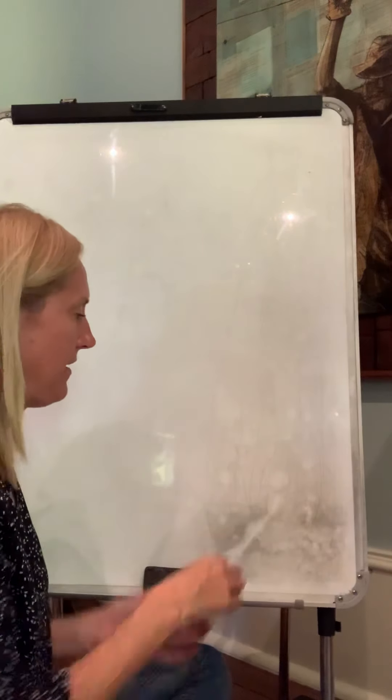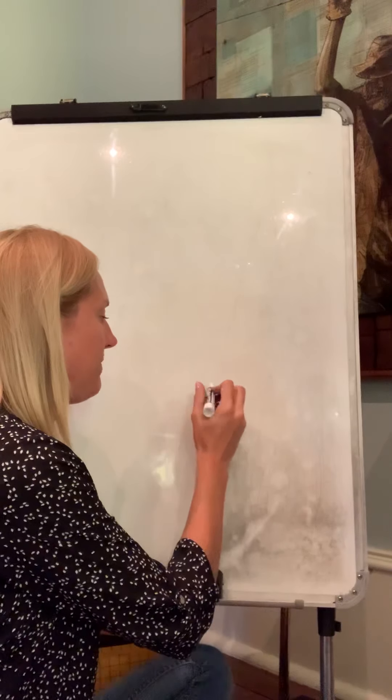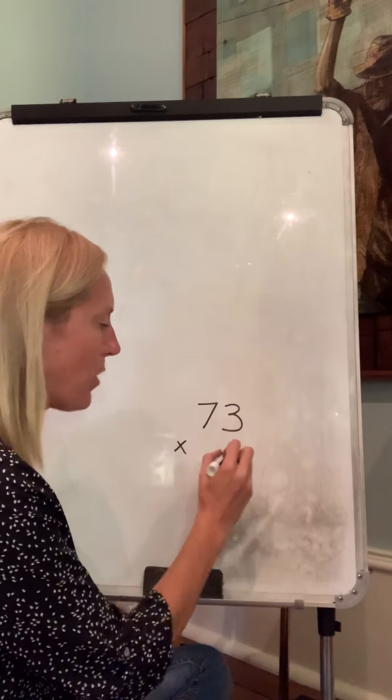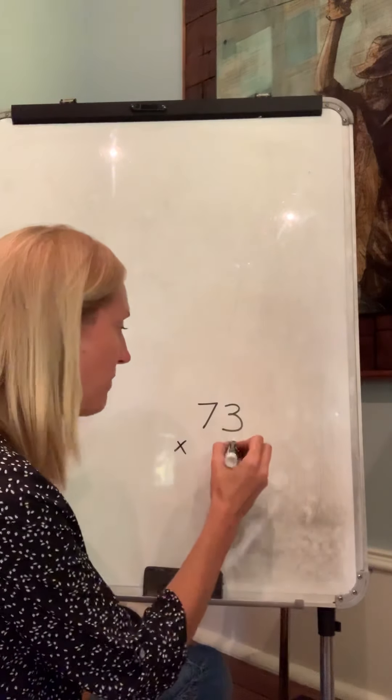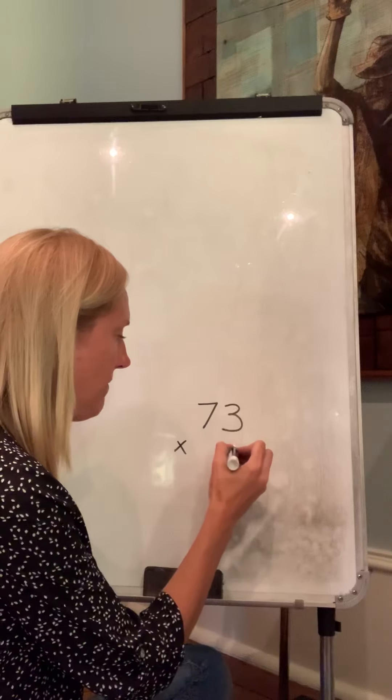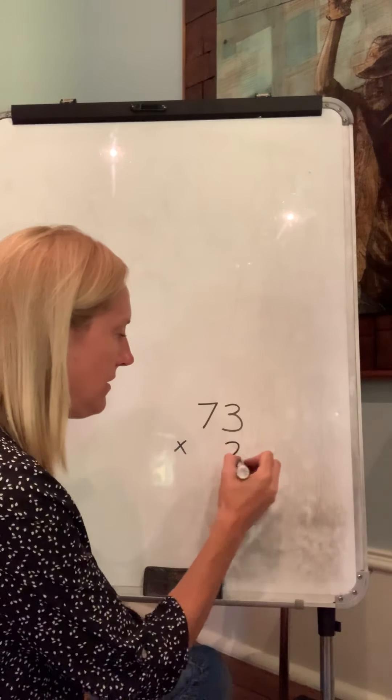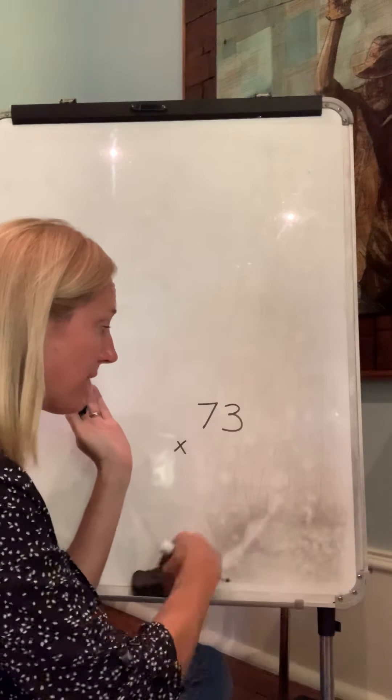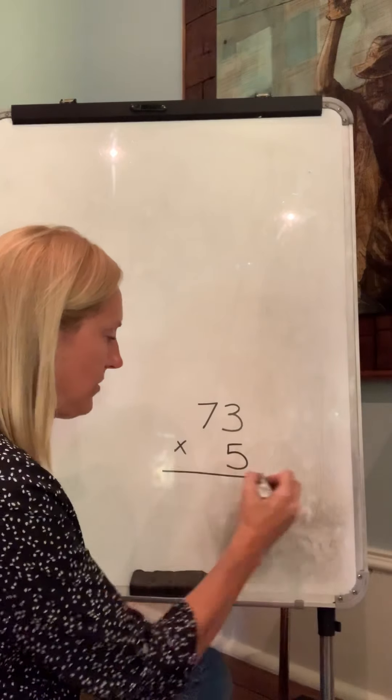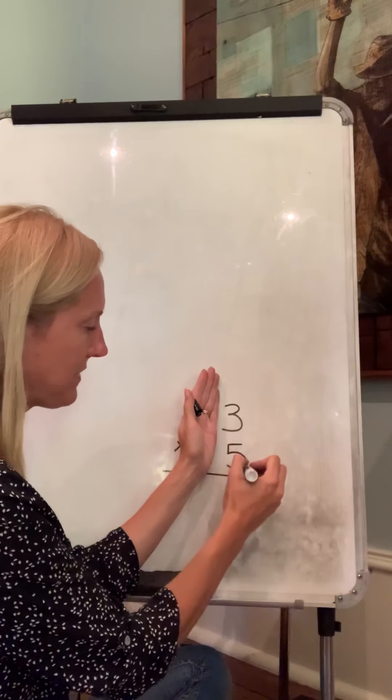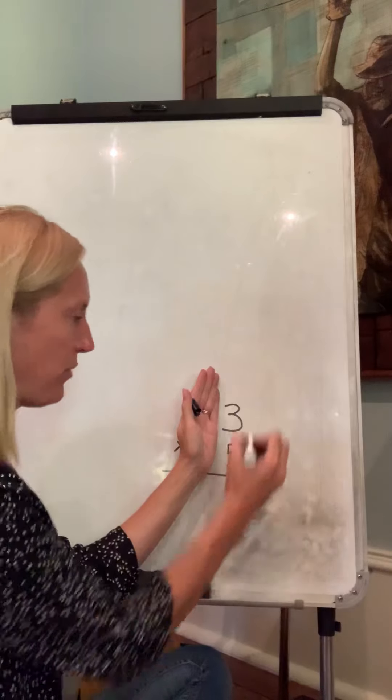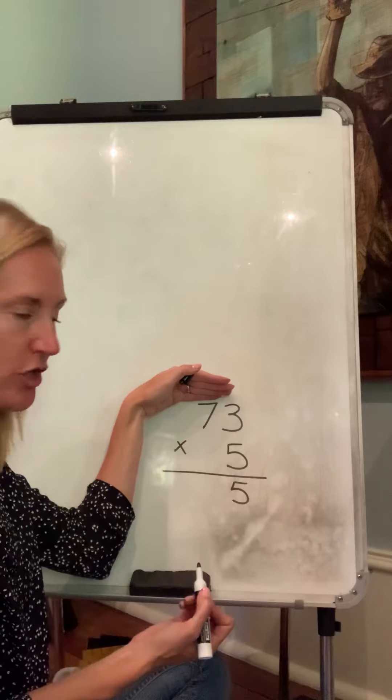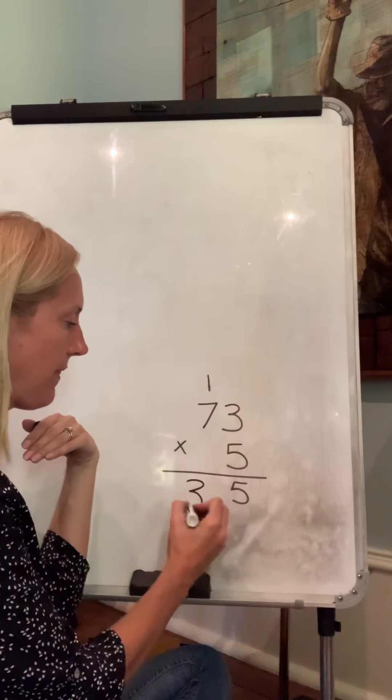What I'd like you to do if you want to challenge yourself is practice some of these, but just do a two-digit number like seventy-three times a one-digit number. It can either be a small number like two, or you can make it a bigger number like five. Three times five is fifteen - I've got to put that one digit over here. Seven times five is thirty-five, plus one more is thirty-six.